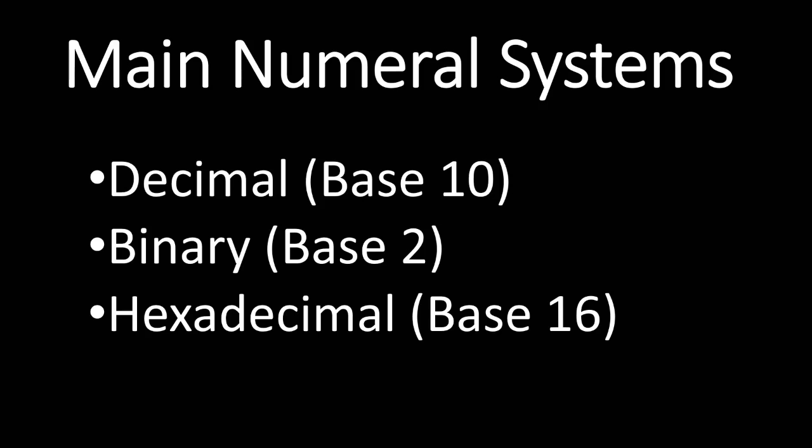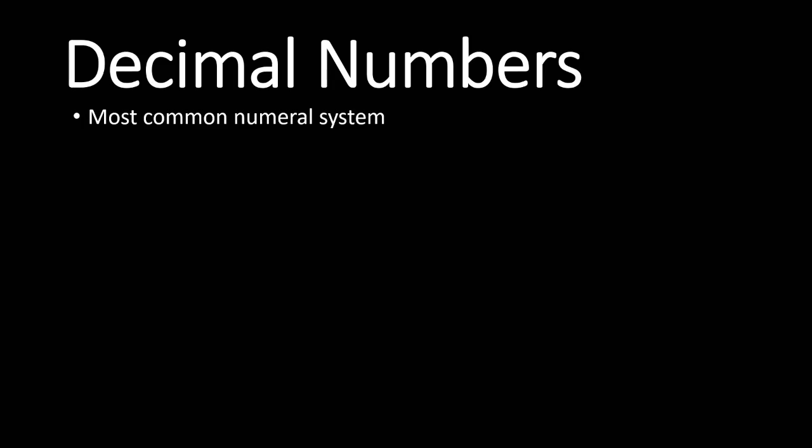We'll start by talking about decimal or base 10, then binary, base 2, and we'll talk also about hexadecimal which is base 16. In the coming few slides I will discuss these systems in more detail. So let's start by talking about decimal numbers, which are the common numbers we use in our daily life. Decimal means 10, and this is the numbering system that we teach to our kids in school and we use when we sell and buy products or when doing any calculations. It is the most common numeral system in our daily lives.